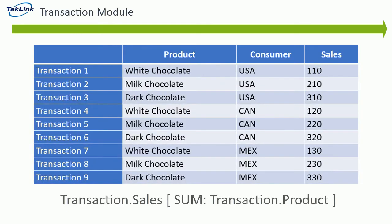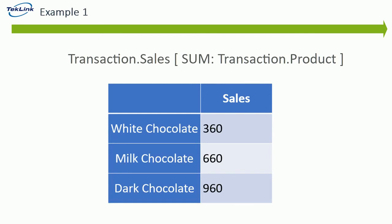Looking back at our original source table, our sum function is going to look something like this. We're going to take the sales numbers and sum them based on our products. So Transaction.Sales is going to go on the outside of the bracket, SUM colon, and then Transaction.Products is going to go inside the brackets. Entering this formula into our target module will give us the following table. We can see all of our sales numbers have been summed up by products. If we wanted to add another dimension to the table, we can do that by adding another argument from inside the brackets.